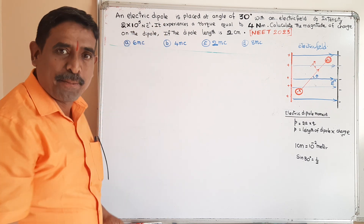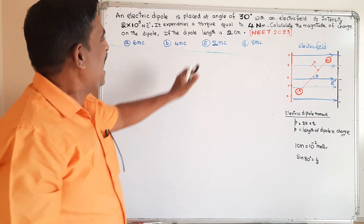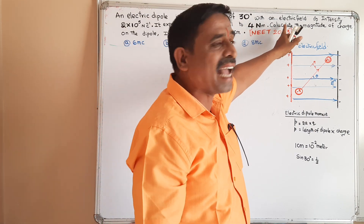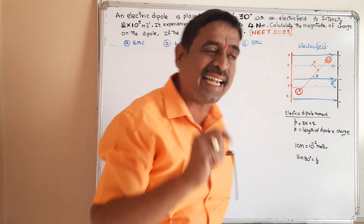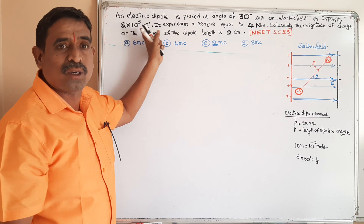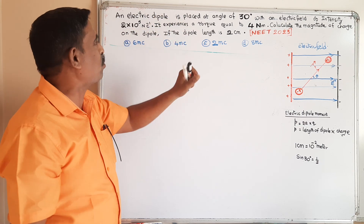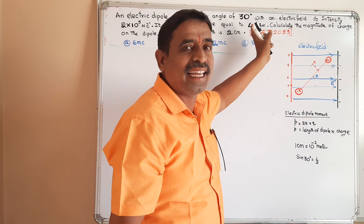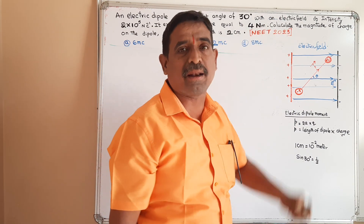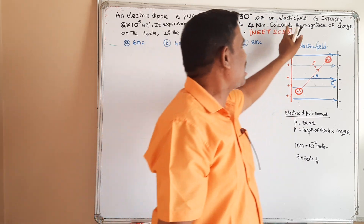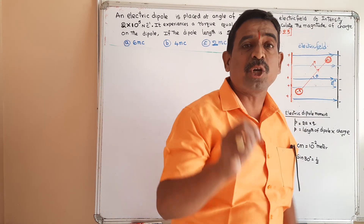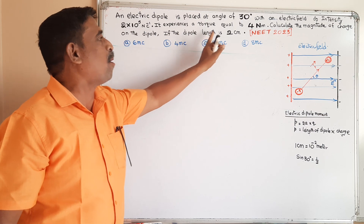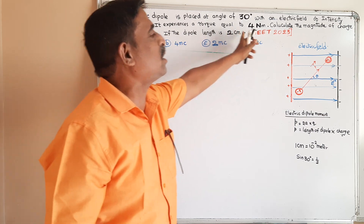An electric dipole is placed at an angle of 30 degrees with an electric field of intensity 2×10⁵ newton per coulomb. It experiences a torque equal to 4 newton meter. Calculate the magnitude of the charge on the dipole if the dipole length is 2 centimeter.